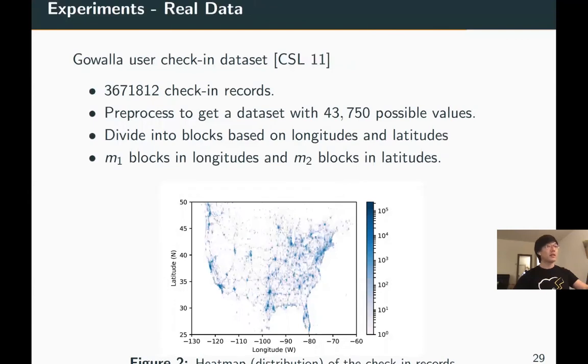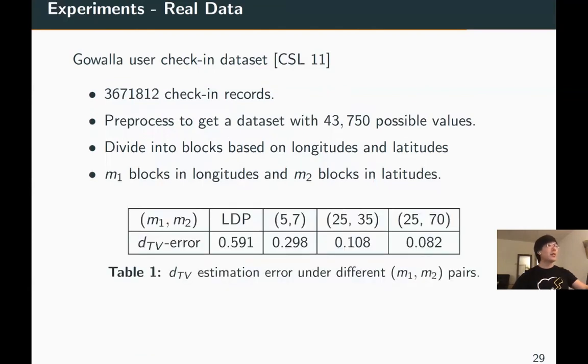For real data, we consider Gowalla user check-in dataset, which consists of more than 3 million check-in records. We did preprocessing to get a dataset with input alphabet size more than 40,000. The following is a heat map of the preprocessed dataset. By dividing the elements into blocks, both horizontally and vertically, we can see we get decent estimation accuracy for block-structured LDP case, whereas for the LDP case, we barely learn anything. This demonstrates the practicability of our framework at realistic scale datasets.